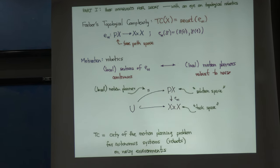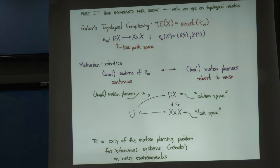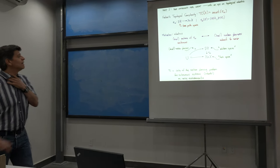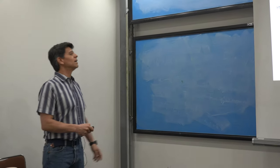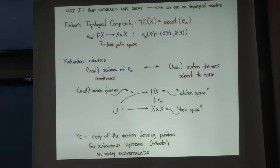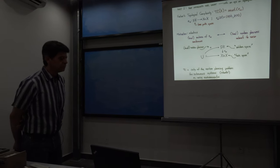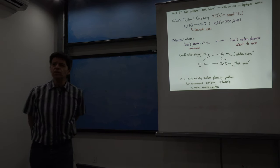Suppose X is the configuration space of some robot. The Cartesian product can be thought of as the space of motion tasks — you have a pair of initial and final positions. The free path space can be thought of as the space of solutions. A section for this fibration would be a motion planner: a rule that assigns to each task a concrete path starting at the initial point and ending at the final point.